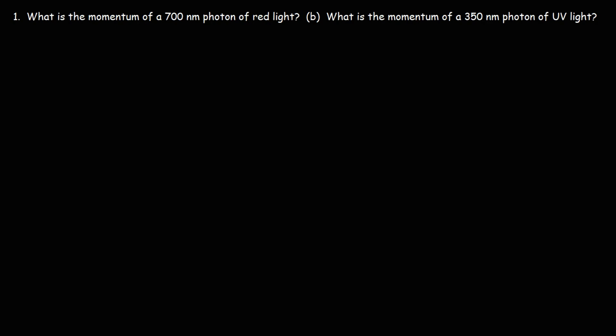In this video, we're going to talk about how to calculate the momentum of a photon. The formula for it is: momentum is equal to Planck's constant divided by the wavelength of a photon.